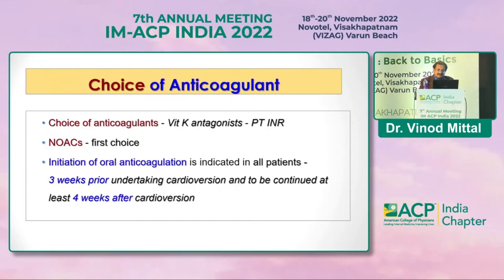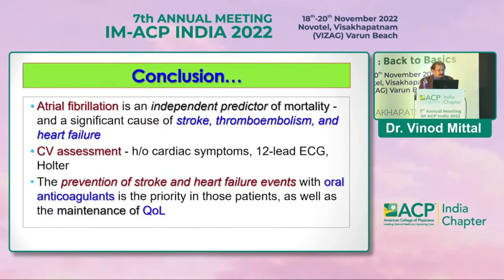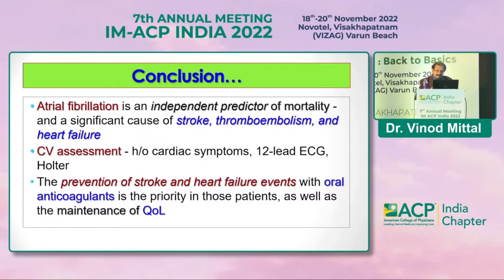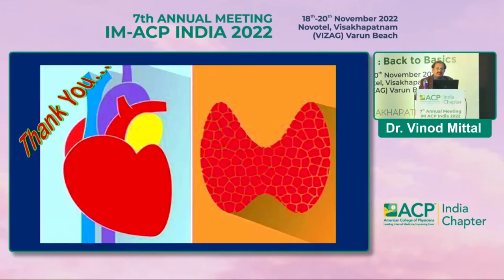To conclude: atrial fibrillation is quite common, especially with hyperthyroidism — including subclinical hyperthyroidism. We must maintain a high index of suspicion. A proper history, ECG, and Holter monitoring should be used to prevent morbidity and mortality from thromboembolism, stroke, and heart failure. Prevention of stroke and heart failure with oral anticoagulants is a priority in these patients and will improve their quality of life.